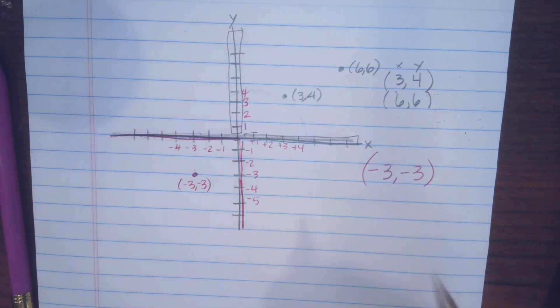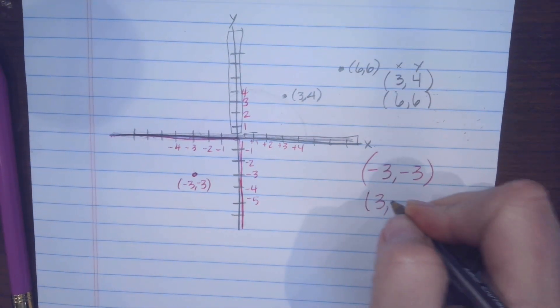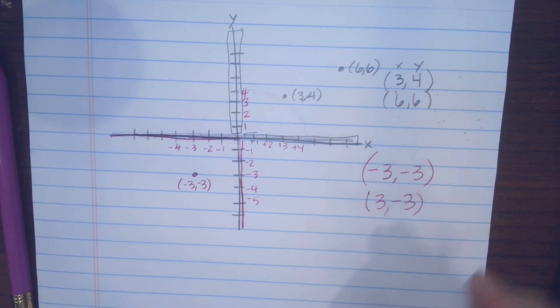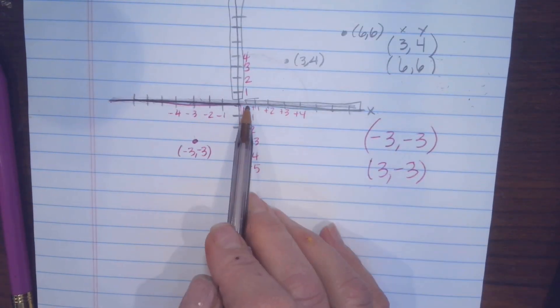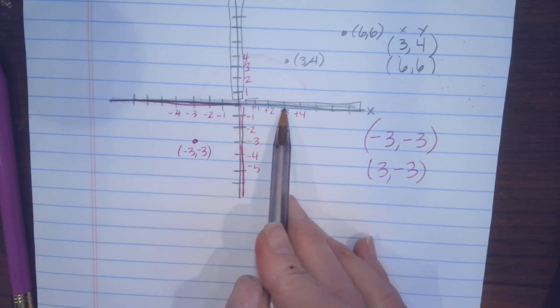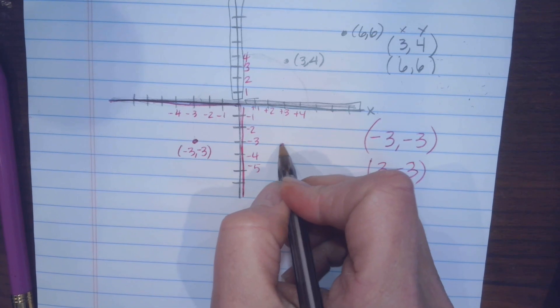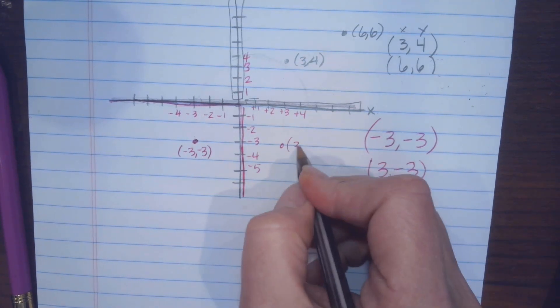And then if you have a positive and a negative, it gets a little tricky. You just have to keep track of what you're doing. So this one is 3, so we know that's the x-axis. We go this way. And then because our y is negative, we go down. Okay.